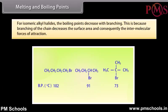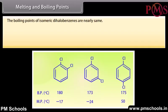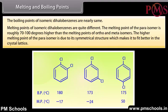For isomeric alkyl halides, the boiling point decreases with branching, because branching of the chain decreases the surface area and consequently the intermolecular forces of attraction. The boiling points of isomeric dihalobenzenes are nearly the same. However, their melting points are quite different — the melting point of the para-isomer is roughly 70 to 100 degrees higher than those of the ortho- and meta-isomers, due to its symmetrical structure which allows it to fit better in the crystal lattice.